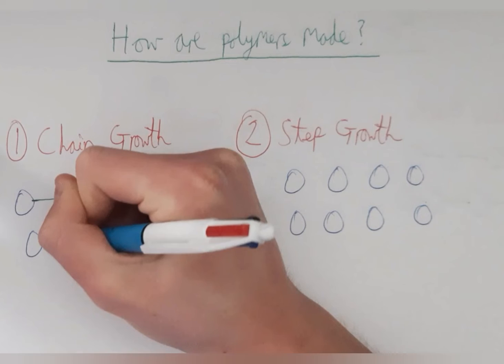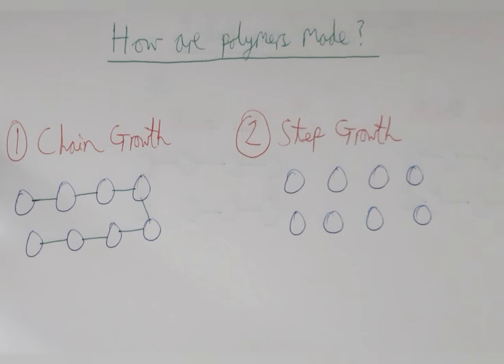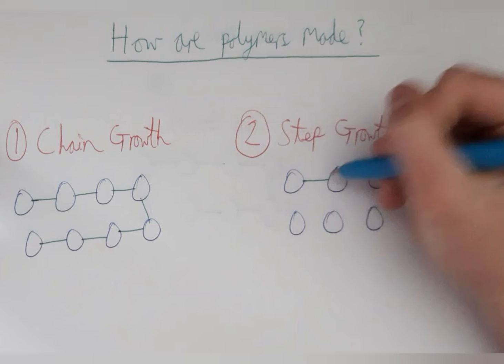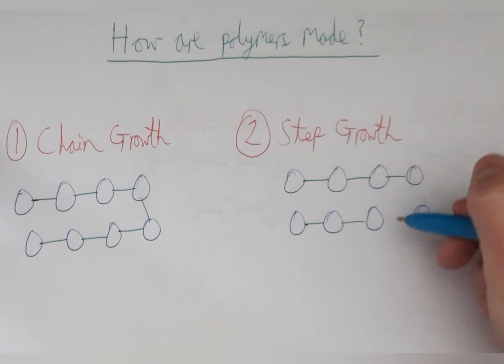In step growth polymerization, both the monomers and the growing polymer chains have reactive groups, which means that separate chains can join together, like so. Separate chains can form and then those separate chains can join together.